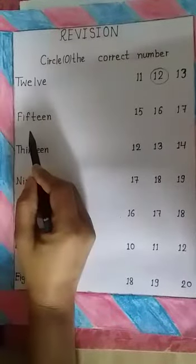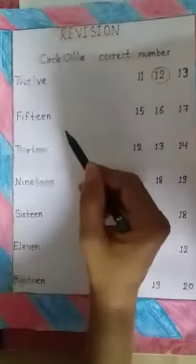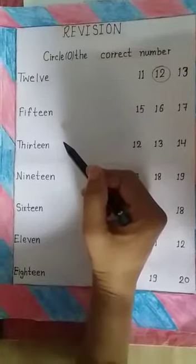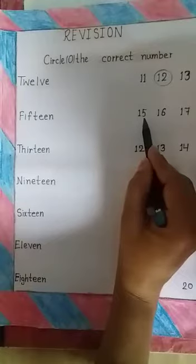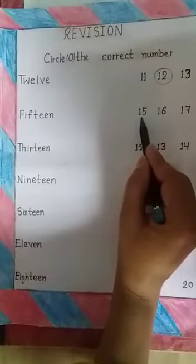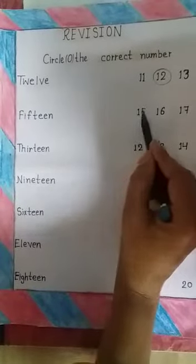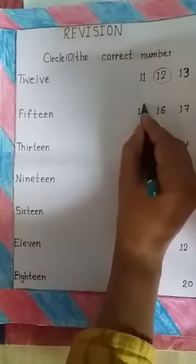In the same way, we will read and circle the correct number. F, I, F, T, E, E, N — fifteen. 15. So we will circle 15.